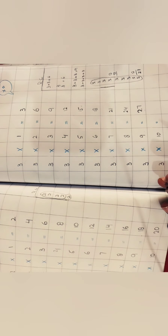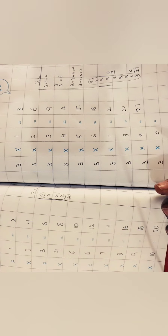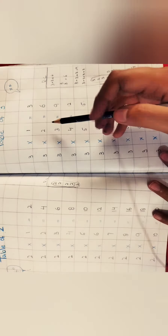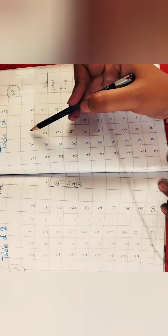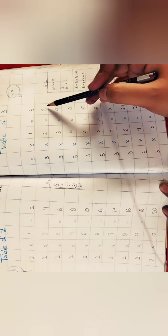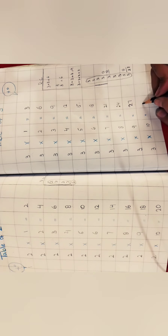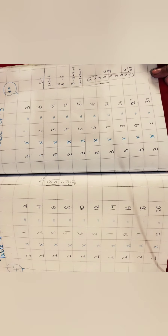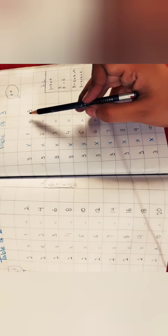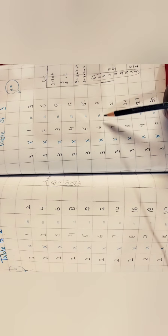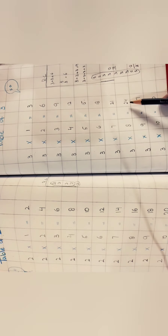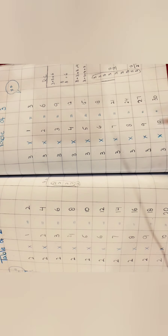Right now I am teaching you how to make the table and what a table is. These are the tables — this is the table of two and this is the table of three. So how you will make the table: you add these numbers equal to the number of times shown. And the table — I am going to read it now. Three ones are three, three twos are six, three threes are nine, three fours are twelve, three fives are fifteen, three sixes are eighteen, three sevens are twenty-one, three eights are twenty-four, three nines are twenty-seven, three tens are thirty.